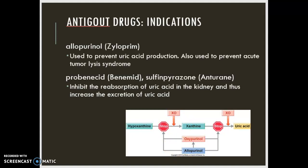Probenecid and sulfinpyrazone are called uricosuric drugs. What they do is reduce the serum urate concentration by increasing renal excretion, and they do this by inhibiting the reabsorption of uric acid in the kidney so that more of it is excreted. These medicines are actually ineffective in the treatment of acute gouty attacks and can actually precipitate an attack early in the course of treatment for hyperuricemia.